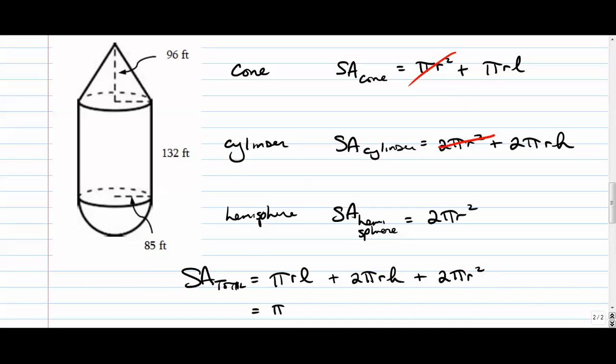See if you can fill in all the stuff. The radius of this is 85. The slant height would be this right here—don't know what that is, I'll come back to that in a moment. Plus 2 pi times 85 times the height—this is the cylinder height, 132. Try to keep these organized: this is the cone, this is the cylinder, and this is the hemisphere. So 2 pi r squared.